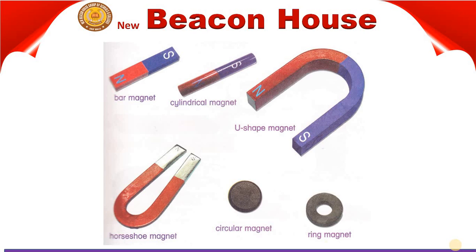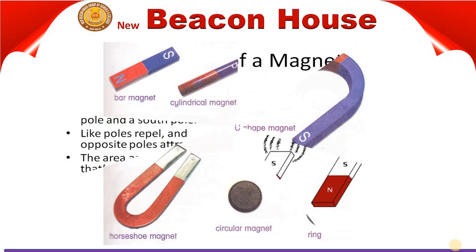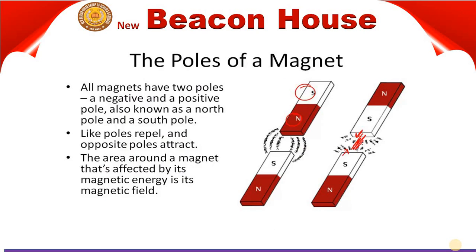These are all the types of magnets. What is common in the first four magnets — bar magnet, cylindrical magnet, U-shaped magnet, and the horseshoe magnet — is that both have a north and south pole. So you can see the poles of the magnet. All magnets have two poles: a negative and a positive pole, also known as north pole and south pole.